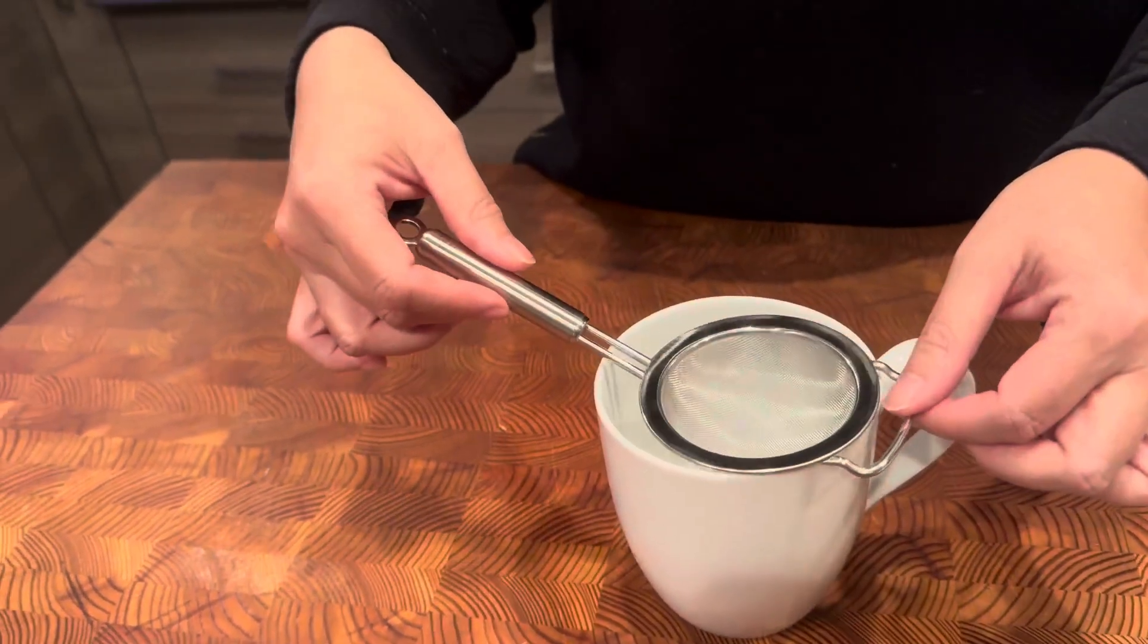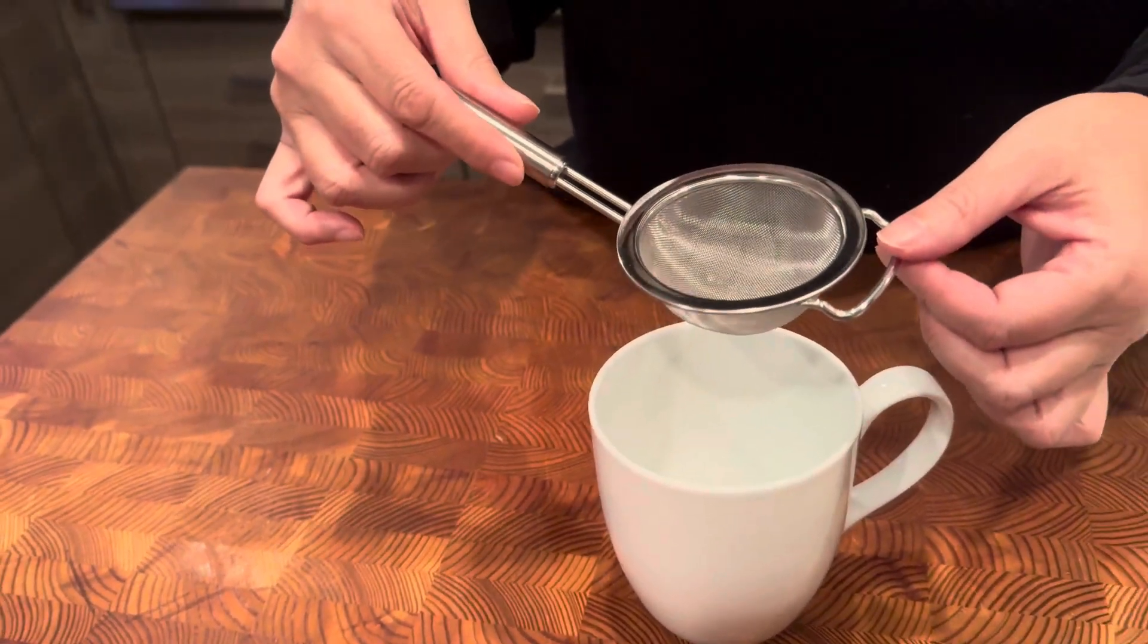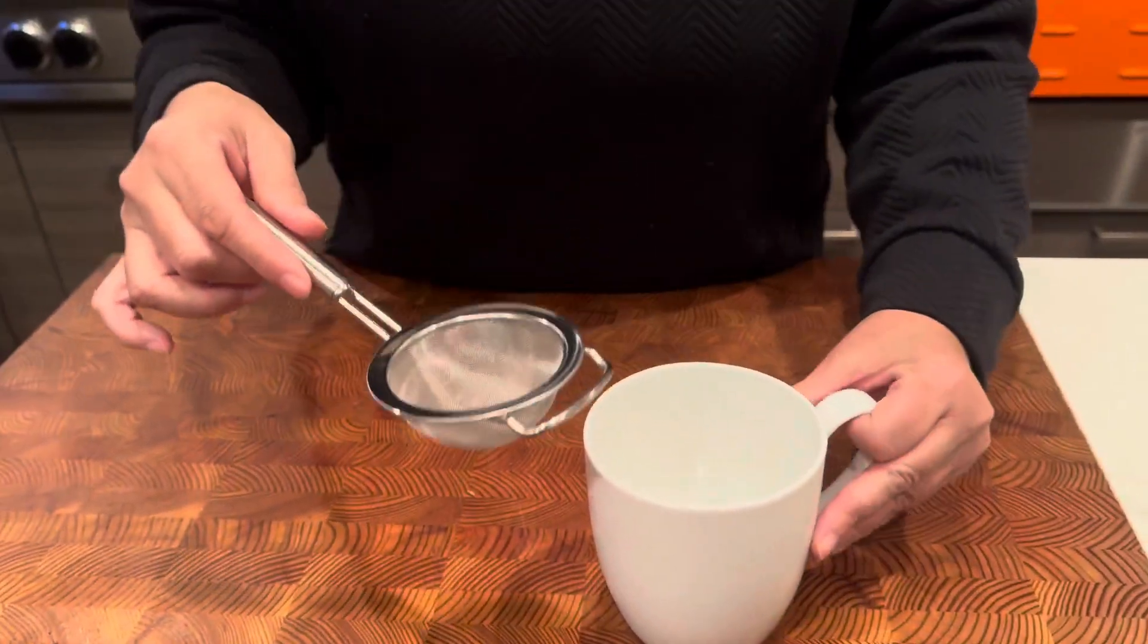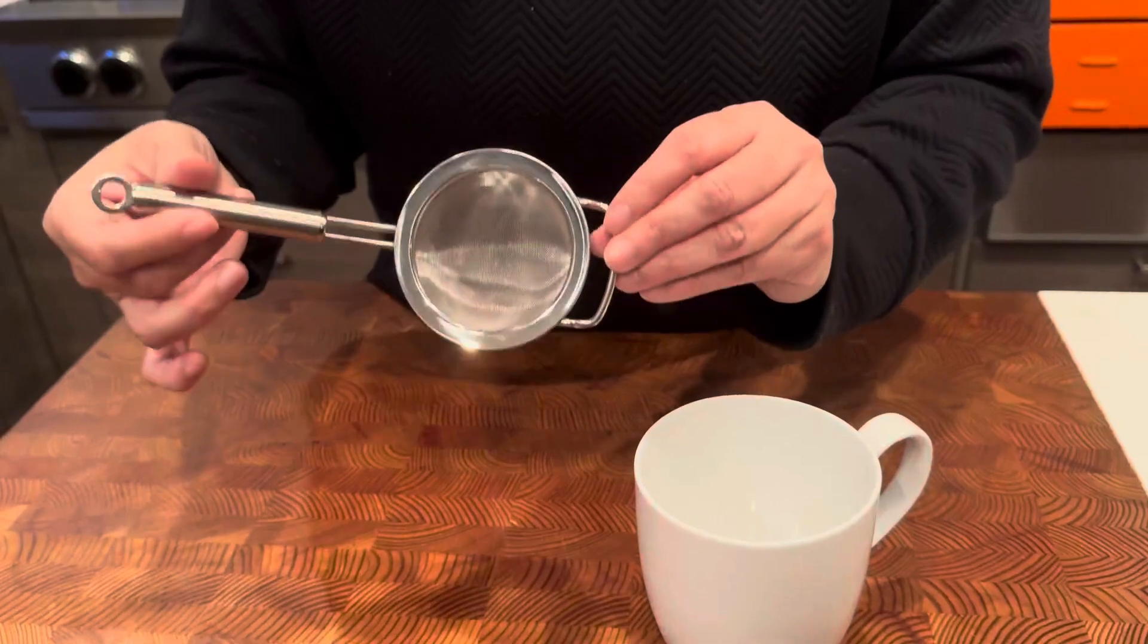I absolutely love this one. It's the perfect size. You can also use it as a duster if you need to put cocoa powder or powdered sugar over any dessert. But definitely as a tea strainer, this is my go-to.